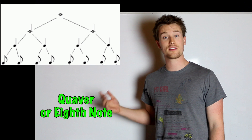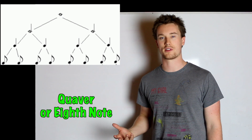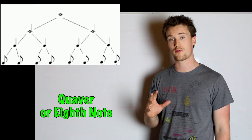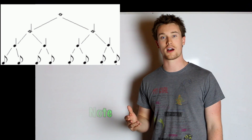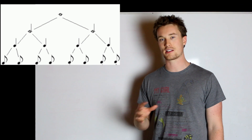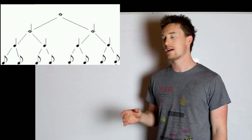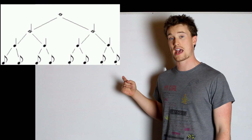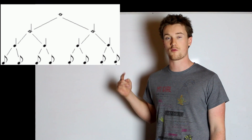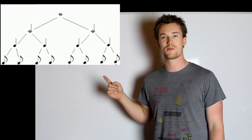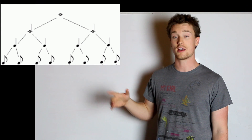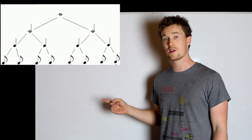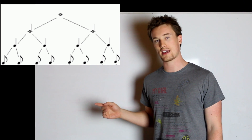Right under crotchets, we have eighth notes or quavers. The reason they're called eighth notes is because in a bar of 4/4 or common time, you're going to have eight of them — that fills an entire bar. So in one bar of common time or 4/4, you can have eight quavers, or four crotchets, or two minims, or one semibreve. Or think of them as whole notes, half notes, quarter notes, and eighth notes.